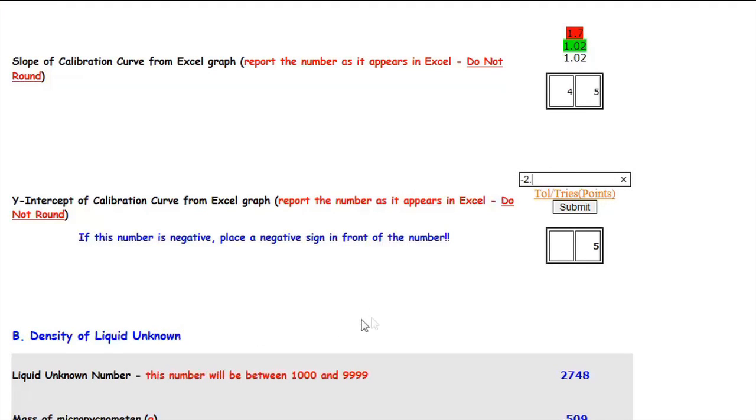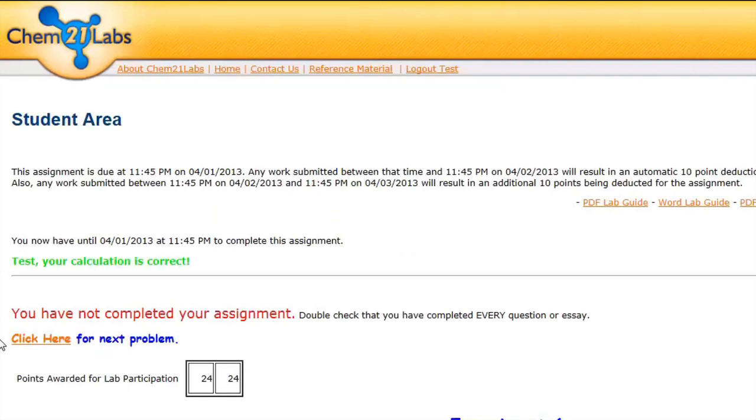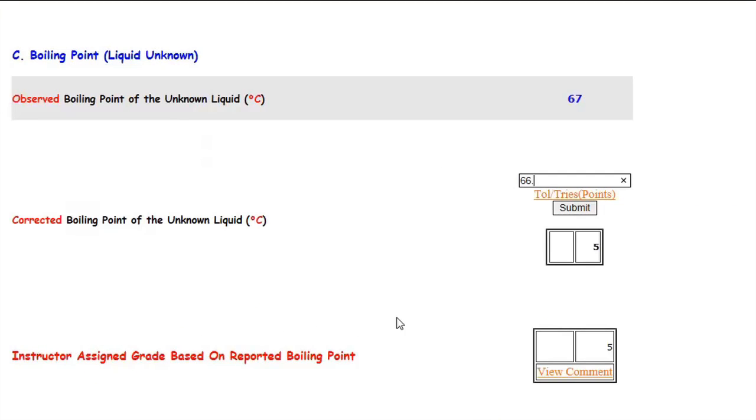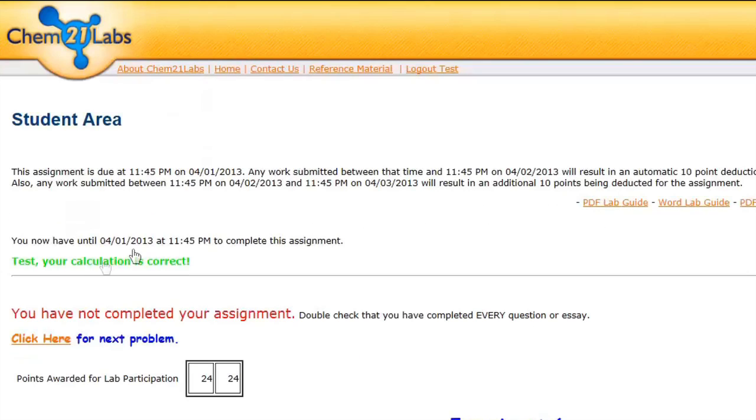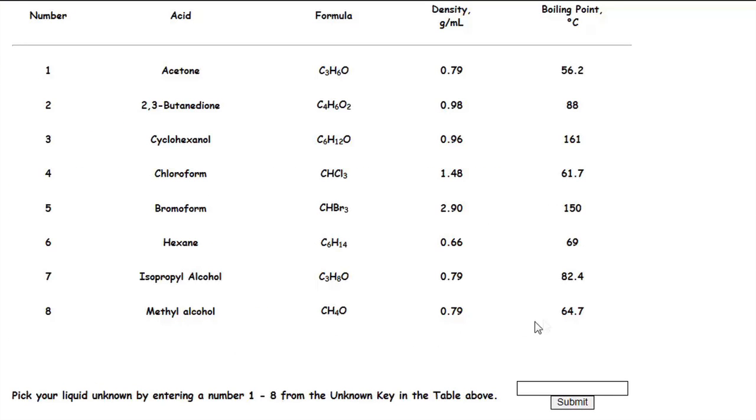The corrected boiling point is found by using the slope and y-intercept along with the observed boiling point. With a corrected boiling point of 66.3 and a density of 0.793, the unknown liquid was easily identified as number 8, methyl alcohol.